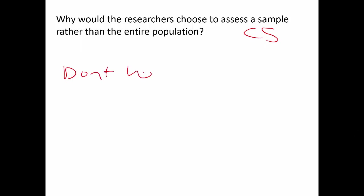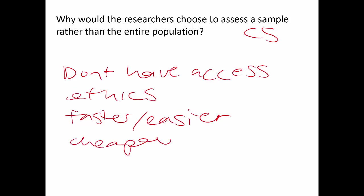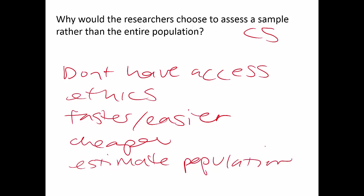The second question, still from chapter five, is: why would I choose to assess a sample rather than a population? Often it's because we don't have access to the entire population. Ethical reasons are another factor — we can't force people into a study. It's also faster, easier, and cheaper to sample. And ultimately, we're using the sample to estimate the population.